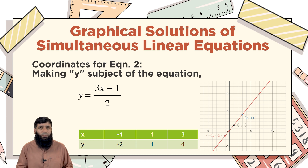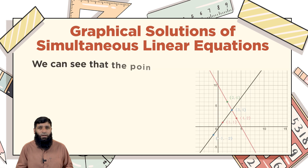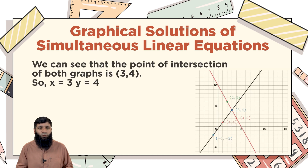Plotting these three coordinates gives us another straight line. To find the solution of the two-by-two system, we look at the point of intersection of both straight lines. In the coordinate system, we can see that both straight lines intersect at x = 3 and y = 4. So the solution of this system of equations is x = 3, y = 4.